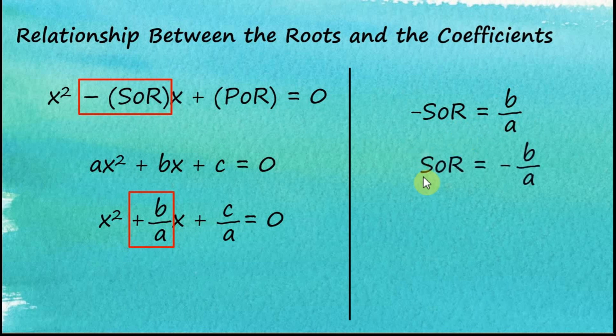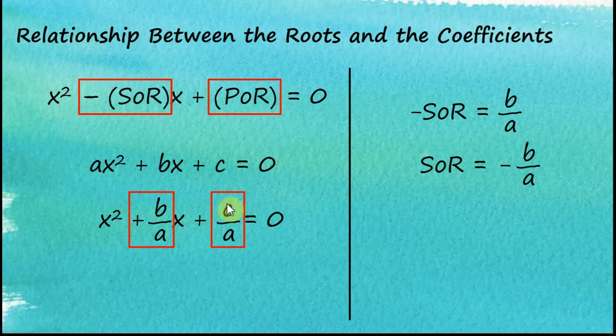Therefore, the negative sum of roots equals b over a, or the sum of roots equals negative b over a. Comparing the constant term, we find that the product of roots is equal to c over a. These are two very important formulas you need to remember to solve problems related to the sum and product of roots.